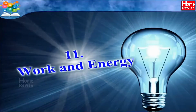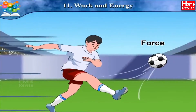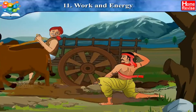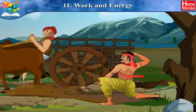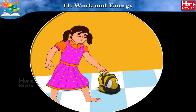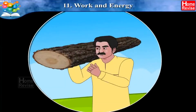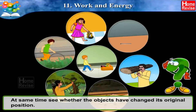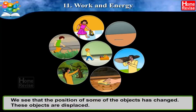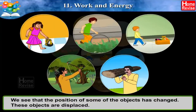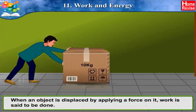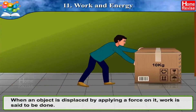Chapter 11: Work and Energy. In the last chapter we learned about force and types of forces. In order to apply force, energy is required. Observe these pictures — what actions are seen, and have the objects changed their original position? In all the above pictures we can see that the position of some objects has changed; that is, these objects are displaced. When an object is displaced by applying a force on it, work is said to be done.